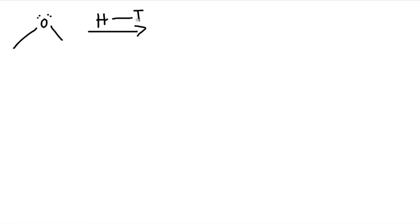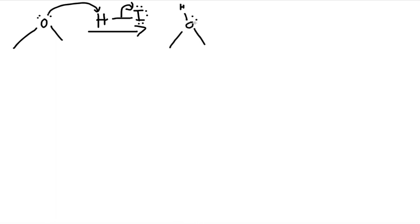Now let's try an example and do the mechanism. We start with an ether and use HI, which has three lone pairs and iodide. First, the oxygen lone pairs go to hydrogen, which kicks off the iodide. We form a structure with oxygen having a positive charge. Iodide comes in as a nucleophile with a negative charge, grabs that carbon, kicks it off, giving electrons to oxygen.